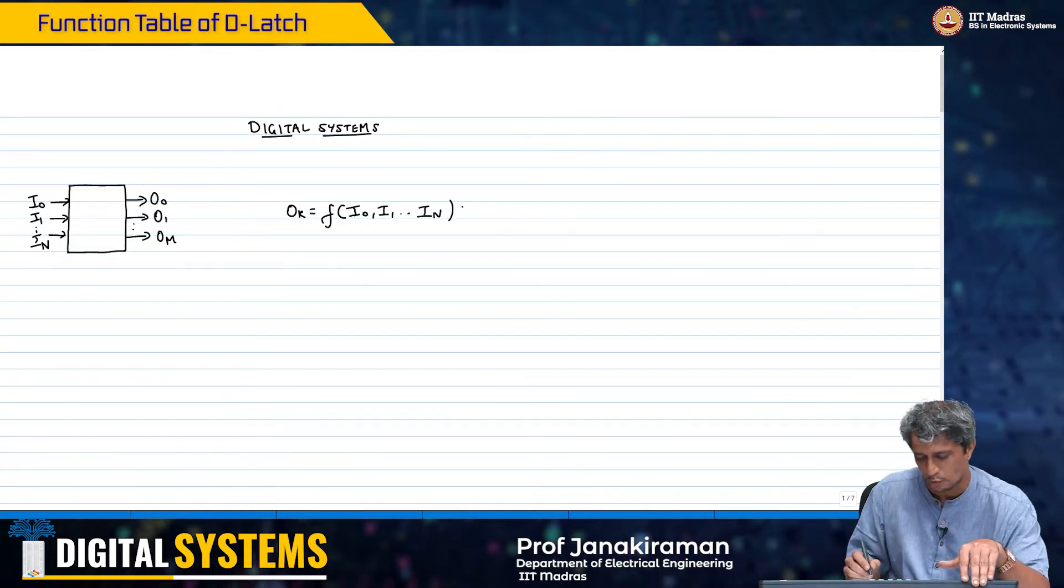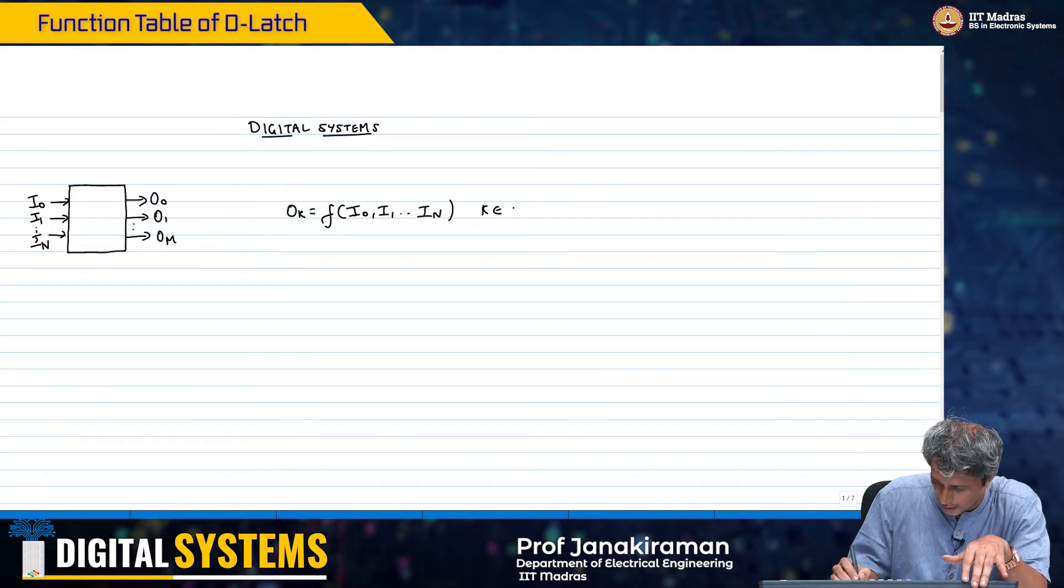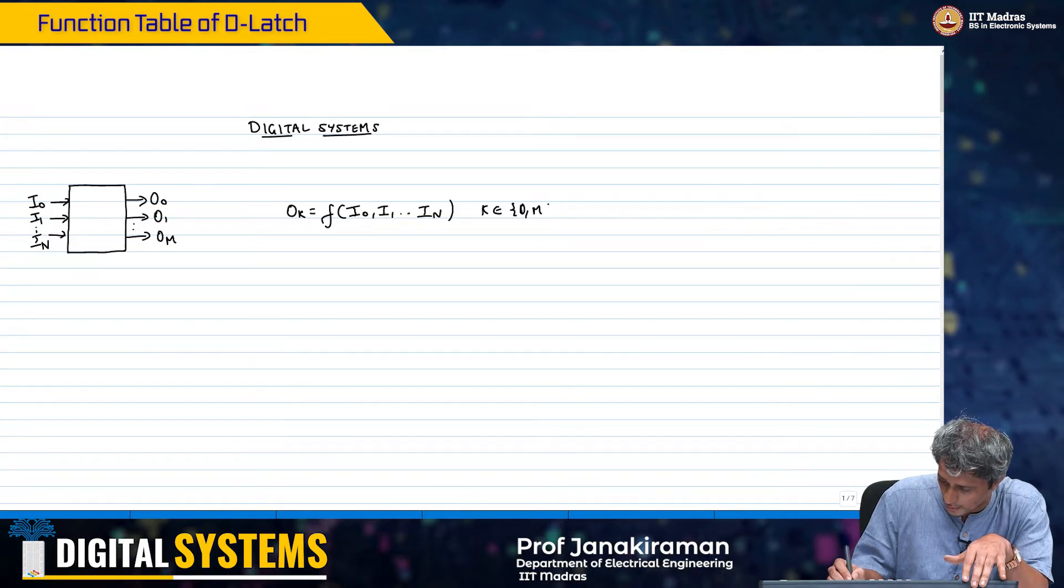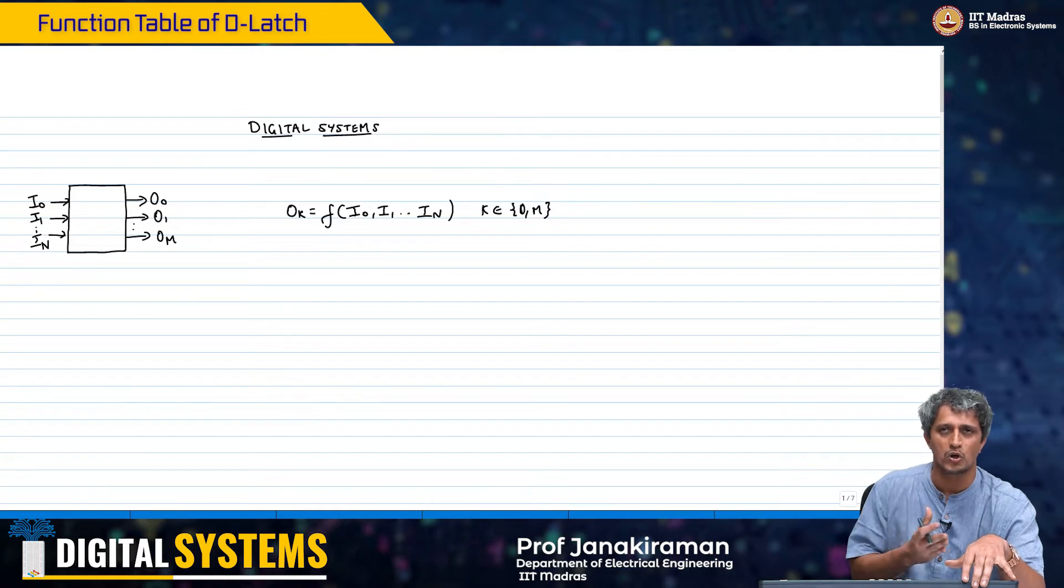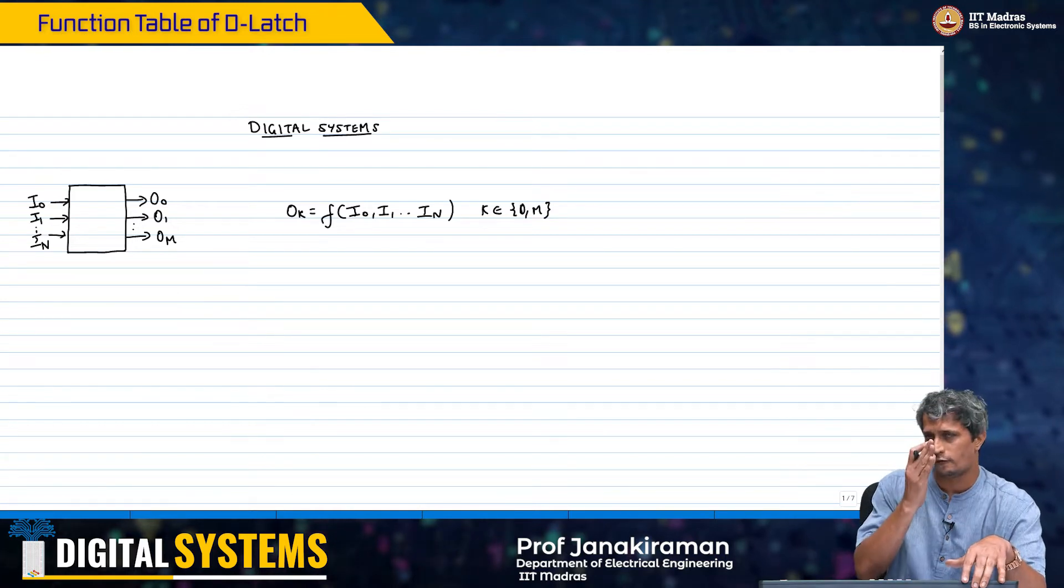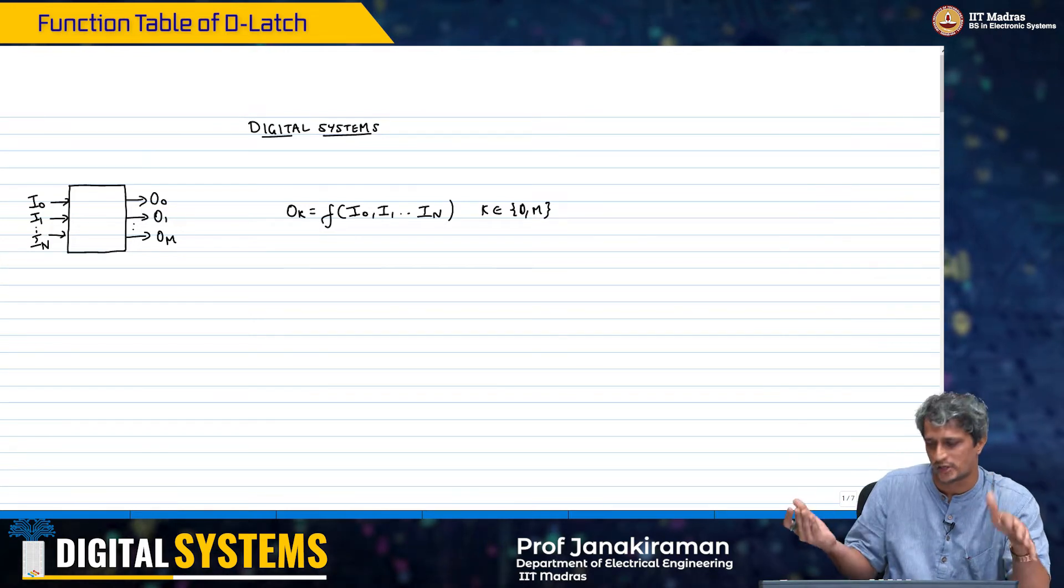There are n+1 inputs and m+1 outputs, and k element of 0 to m. Essentially each output was just a function of the input at that particular time and with some delay the outputs would stabilize.